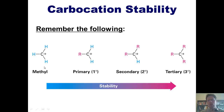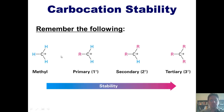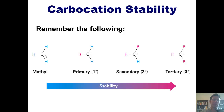A tertiary carbocation is one in which the positively charged carbon is bonded to three different carbons. Each of these R groups represents carbons. A secondary is a carbocation in which the positively charged carbon is bonded to two carbons. A primary is one bonded to one carbon. And a methyl is where it's bonded to just hydrogens. So once again: tertiary carbocations are the most stable, followed by secondary, followed by primary, followed by methyl.